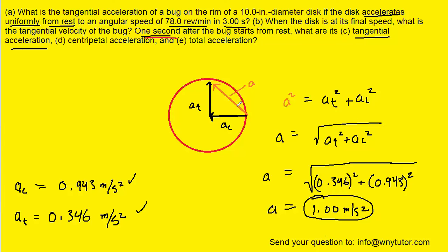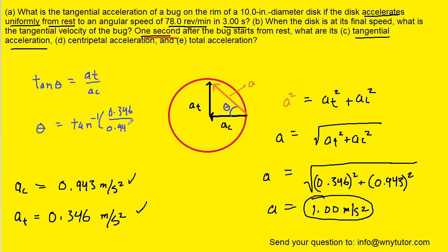We can also find the angle theta. From our right triangle, the tangent of that angle equals the opposite side — the tangential acceleration — divided by the adjacent side — the centripetal acceleration. Taking the inverse tangent of both sides and filling in the values, we get roughly 20.1 degrees. This is the correct answer for the direction of the total acceleration.